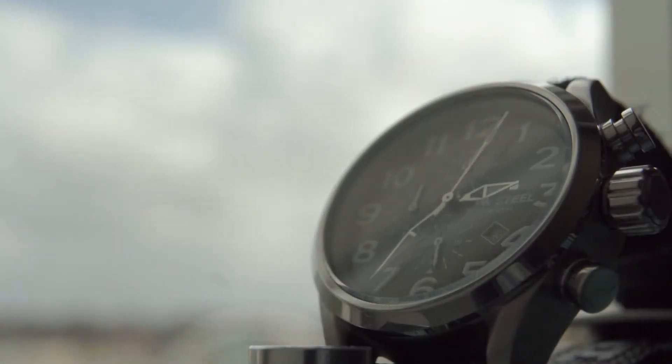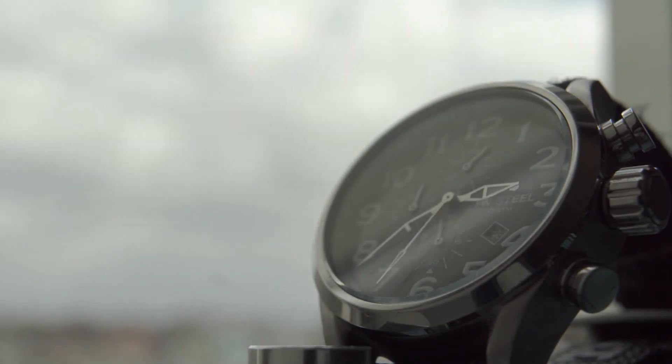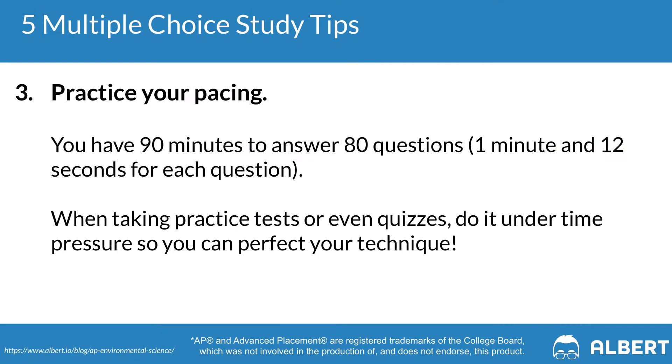Tip three for the multiple choice section is to practice your pacing. You'll have 90 minutes to answer 80 questions, which is about a minute and 12 seconds per question. If a question is taking too long, circle it and come back to it rather than investing too much time on a single question.